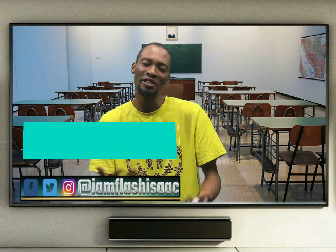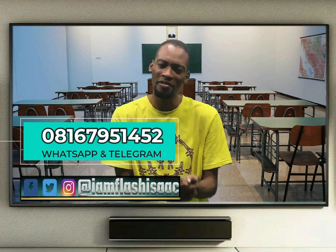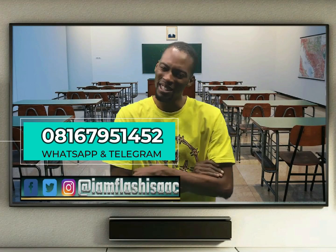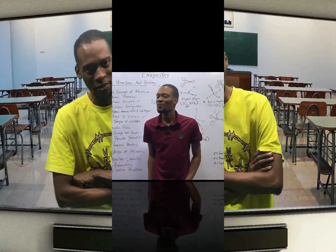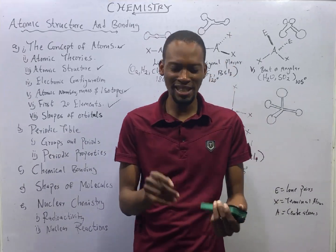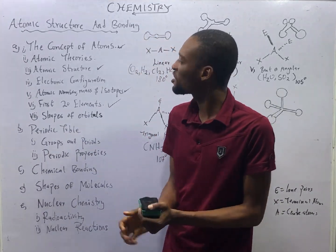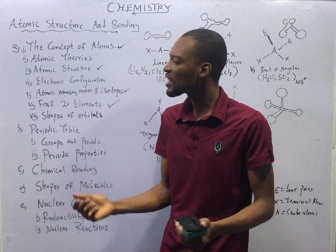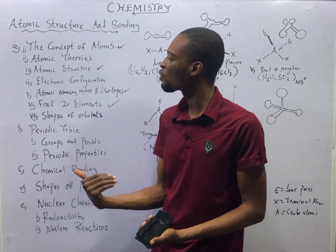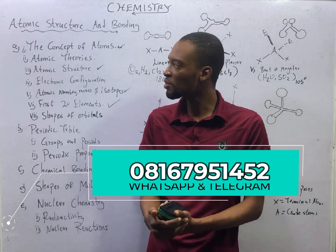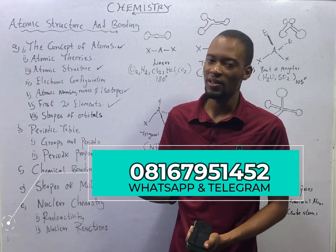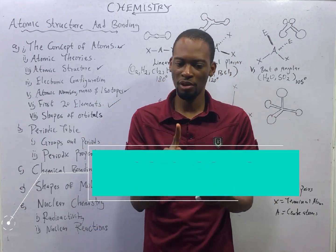Do you have trust issues? Reach me on any of my social handles for activation guides or inquiries. Ladies and gentlemen, it is time to begin. This is episode number 17 of the 120 Days to Jam Chemistry with Flash Isaac. In this episode, we shall continue from where we stopped in the last episode, where we introduced Atomic Structure and Bonding.